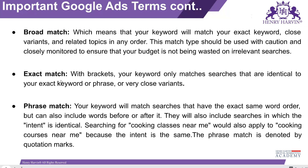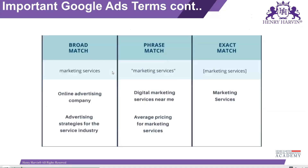For phrase match, here is an example: 'cooking classes near me'. It will also show results for 'cooking courses near me' because 'classes' and 'courses' are relevant and close to each other. So this is how phrase match works. We will learn more about broad match, exact match, and phrase match in detail.